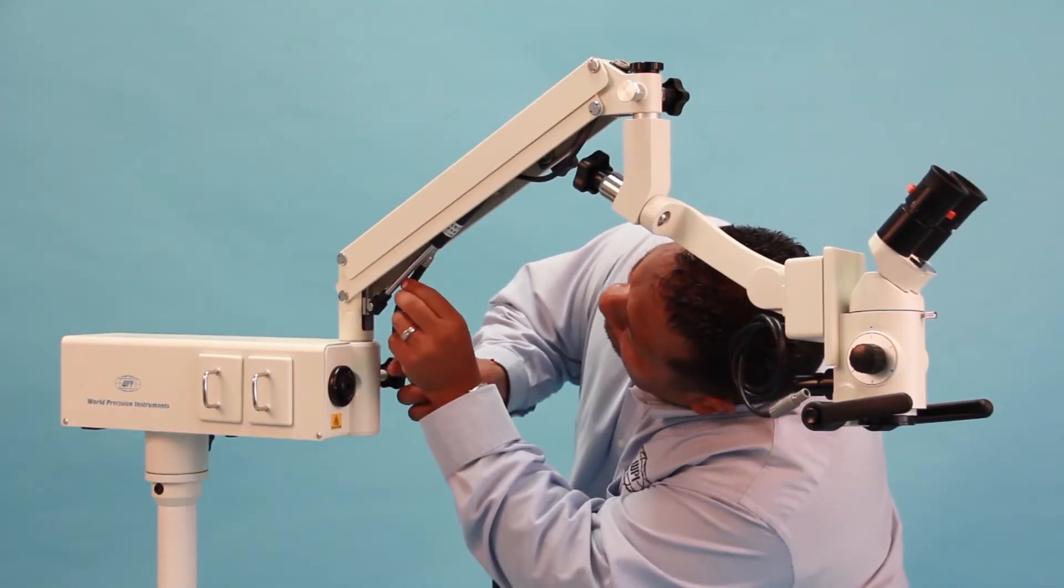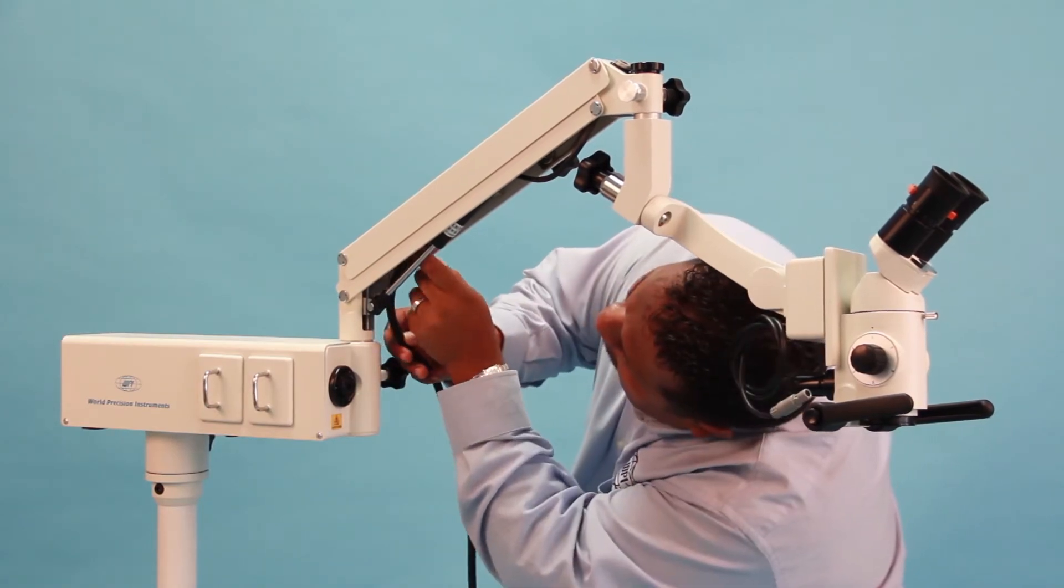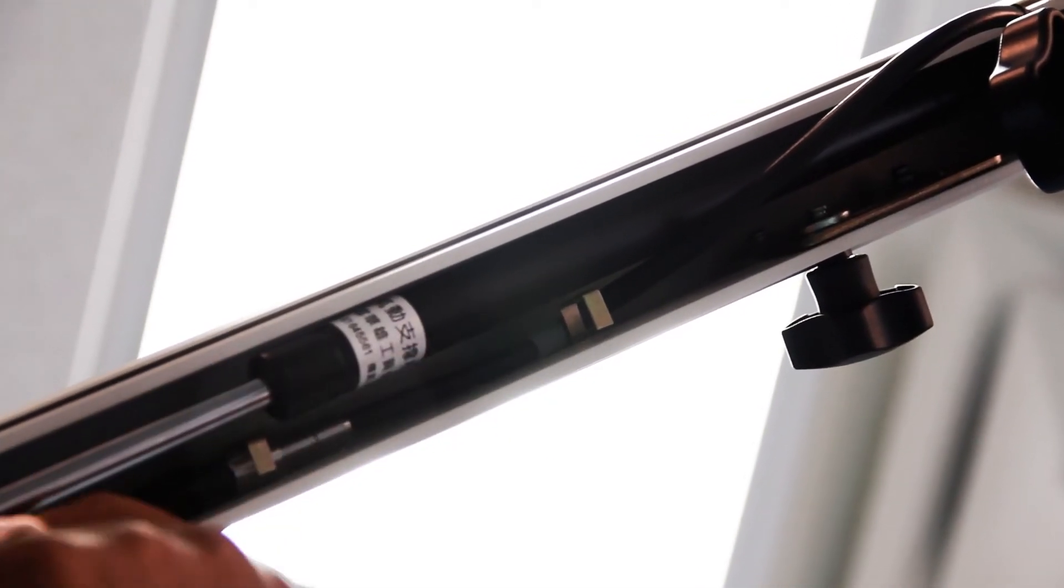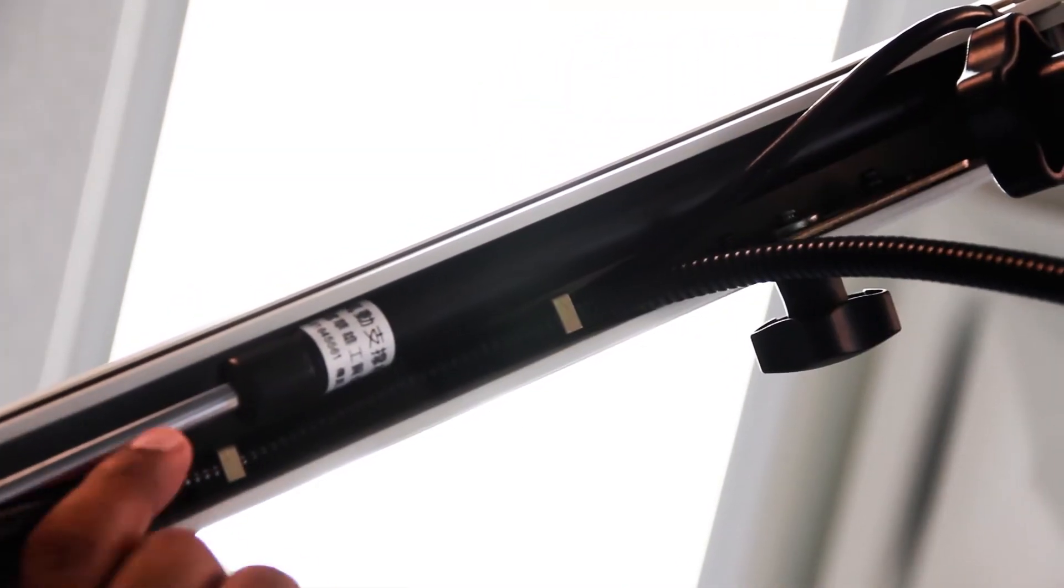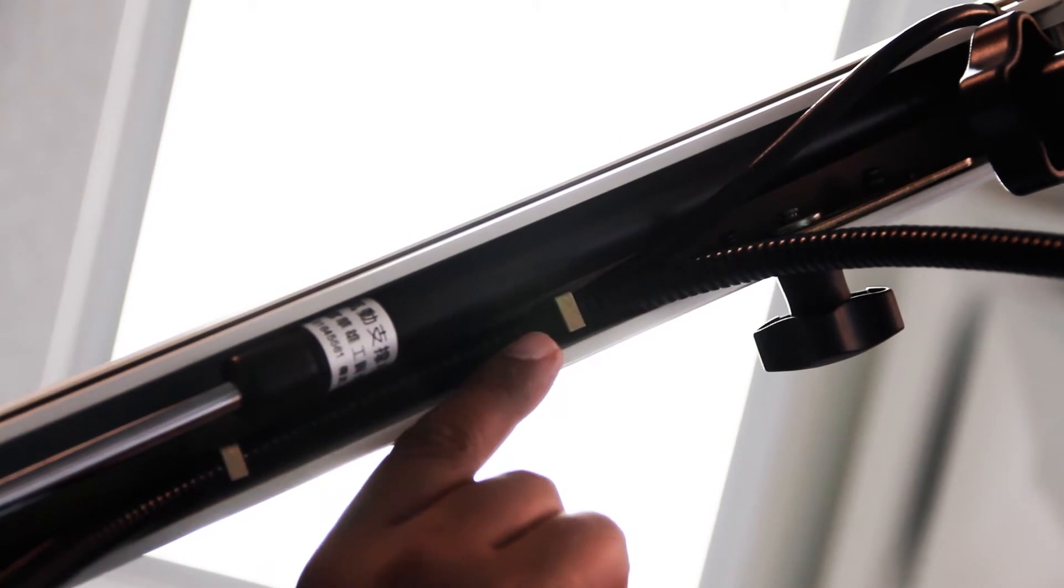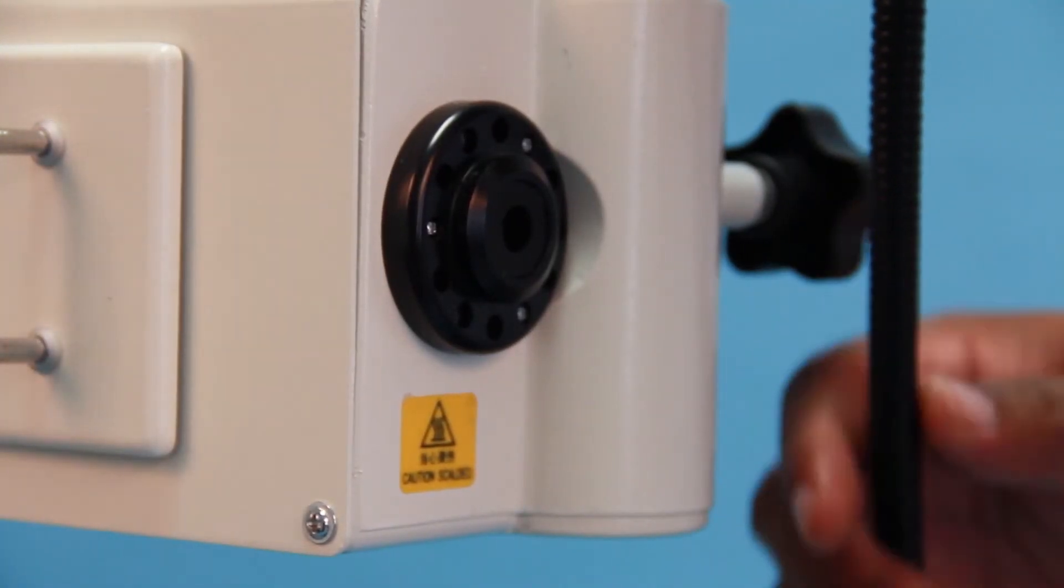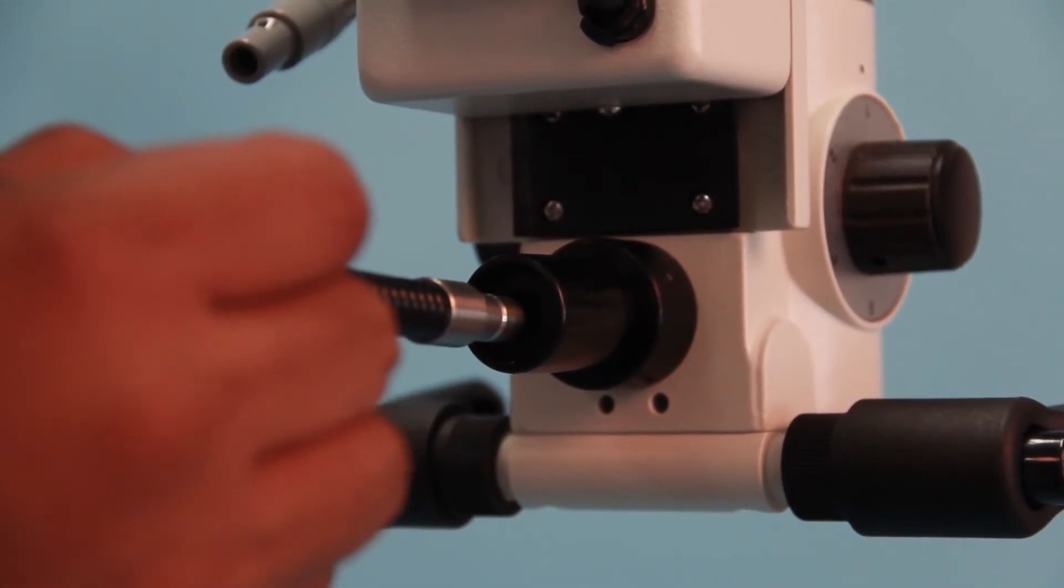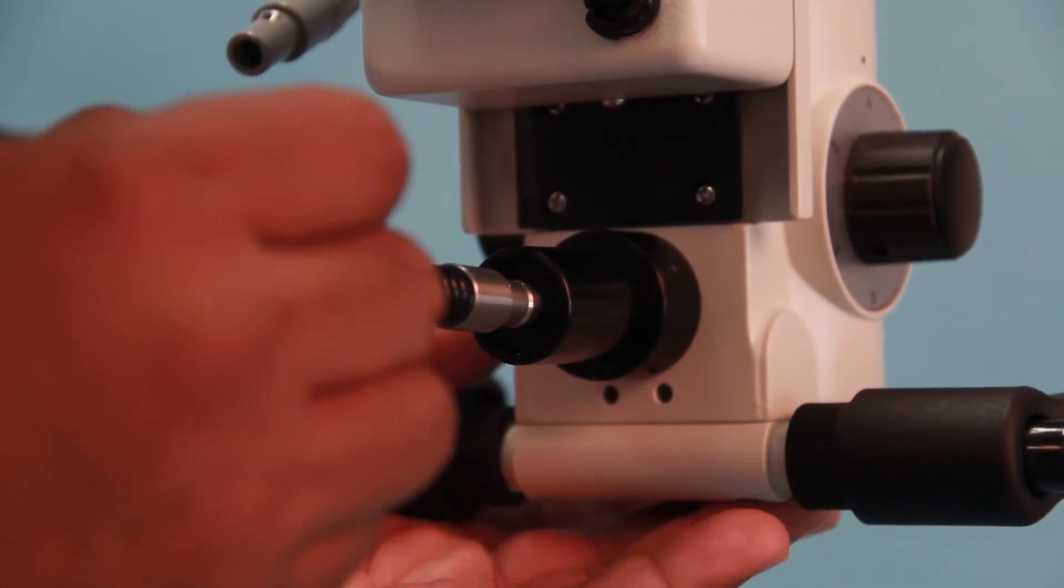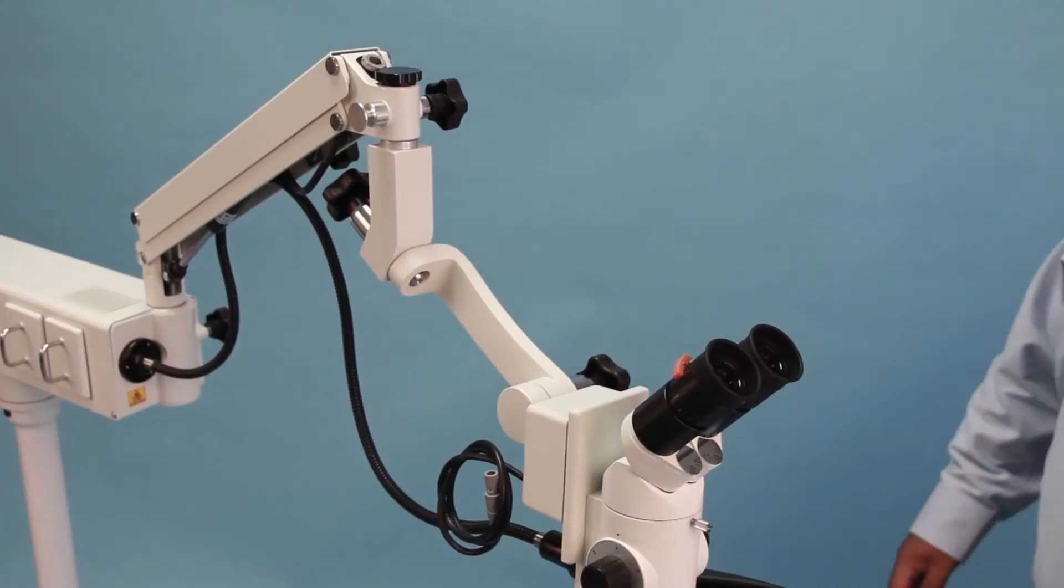The fiber optic cable brings light from a lamp to the subject under the microscope objective. To keep it out of the way, we'll route it through mounting hooks on the underside of the articulating arm. Insert one end of fiber optic cable into the light port connector on the power supply housing. Insert the other end of the fiber optic cable into the corresponding light input port on the microscope head assembly.